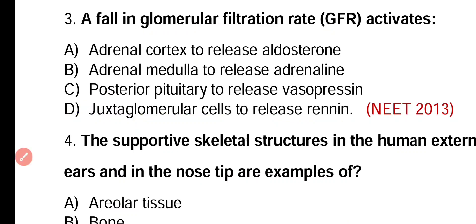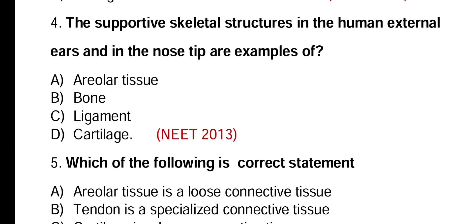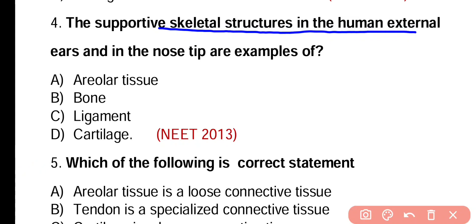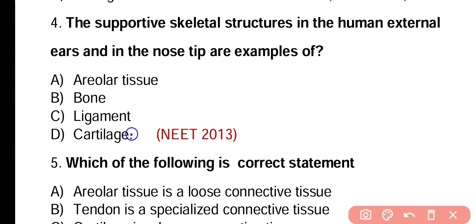Question number 4. Supportive skeletal structure in human external ear and in the nose tip are examples of: areolar tissue, bone, ligament, or cartilage? Correct answer is option D. Cartilage is a form of connective tissue present in external ear as well as nose tip.